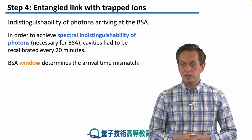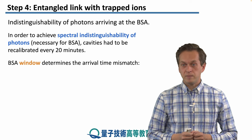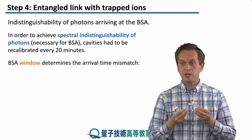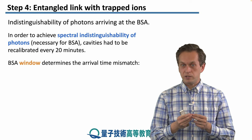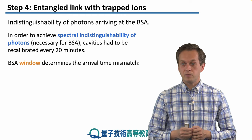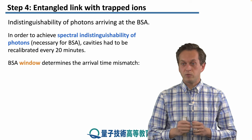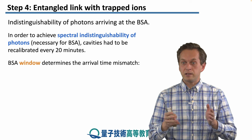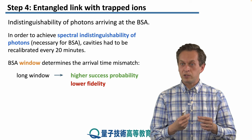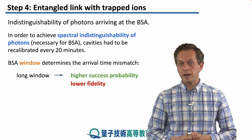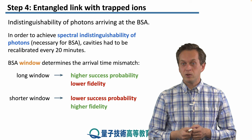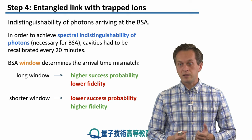The next thing affecting the success rate and fidelity of the final state is the time window set at the BSA. We require the photons to arrive at the BSA at the same time, but in practice they can only arrive very close to each other. We must define what counts as a coincidence, given by the length of this window. A longer window increases success probability since photons don't need to arrive as closely together, but it lowers the fidelity of the final entangled state. Conversely, a shorter window lowers the probability of success but ensures the ions are entangled with much higher fidelity.